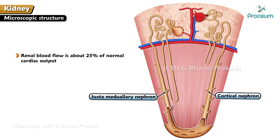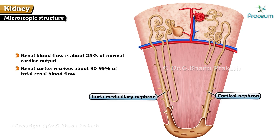Points to ponder: Renal blood flow is normally about 25% of cardiac output. The renal cortex receives about 90 to 95% of total renal blood flow, while the renal medulla receives 5 to 10% of total renal blood flow.